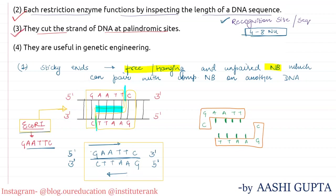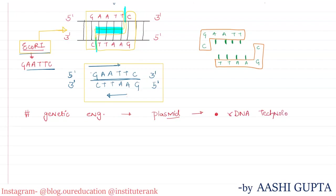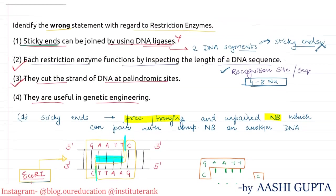The last option says restriction enzymes are useful in genetic engineering. When these cuts are made, the resulting DNA sequences are used in genetic engineering — specifically in recombinant DNA technology, also called r-DNA technology. So this statement is also correct.